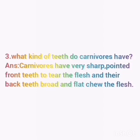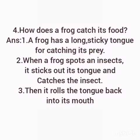Students, write these questions and answers in your notebook and study well. Fourth question: How does a frog catch its food? A frog has a long sticky tongue for catching its prey. When a frog spots an insect, it sticks out its tongue and catches the insect. Then it rolls the tongue back into its mouth.